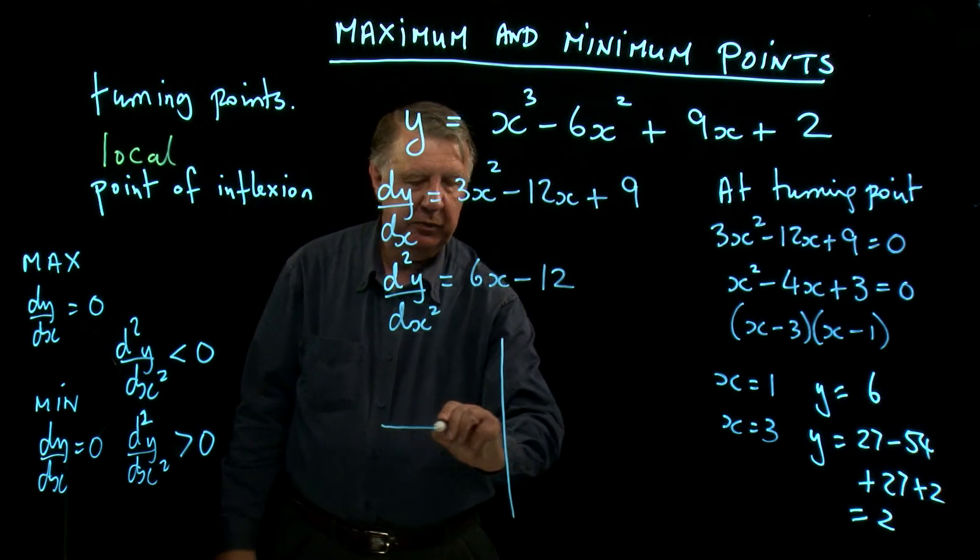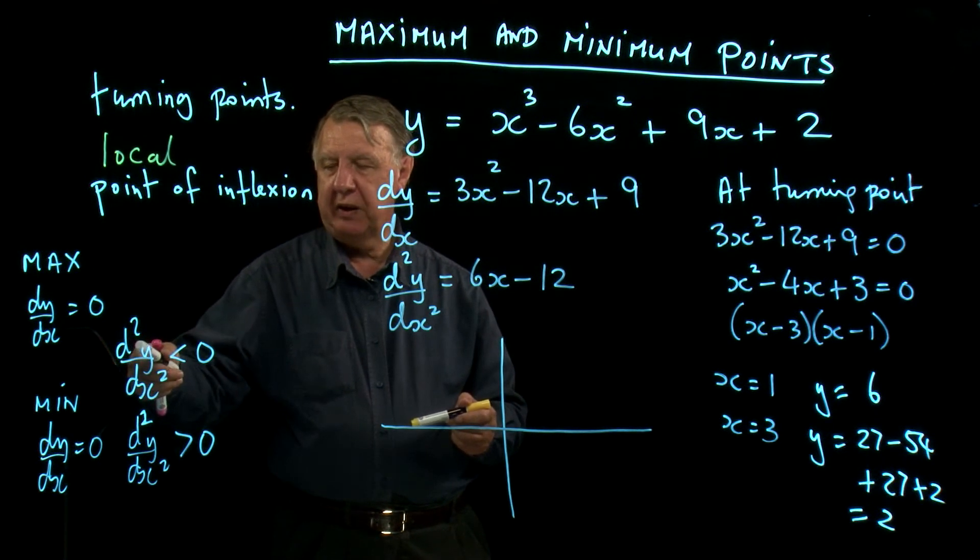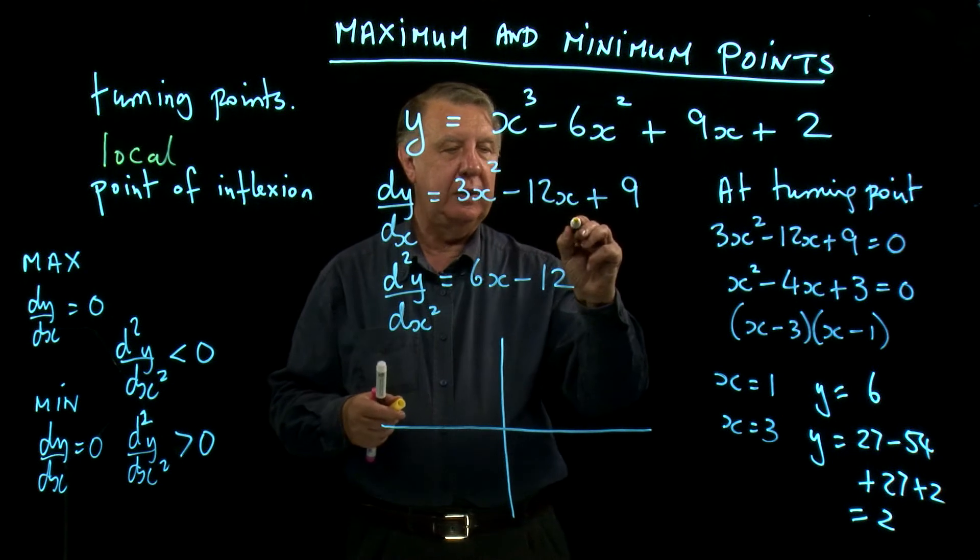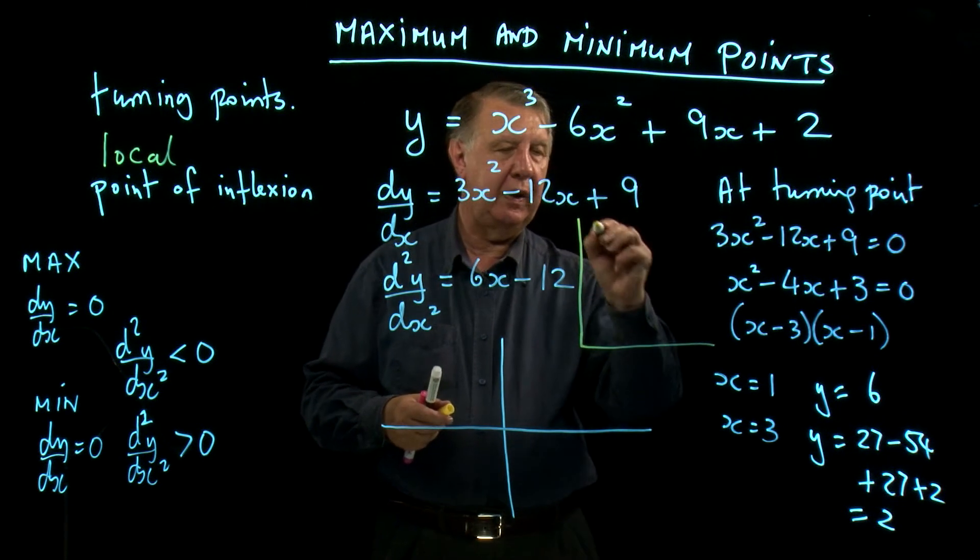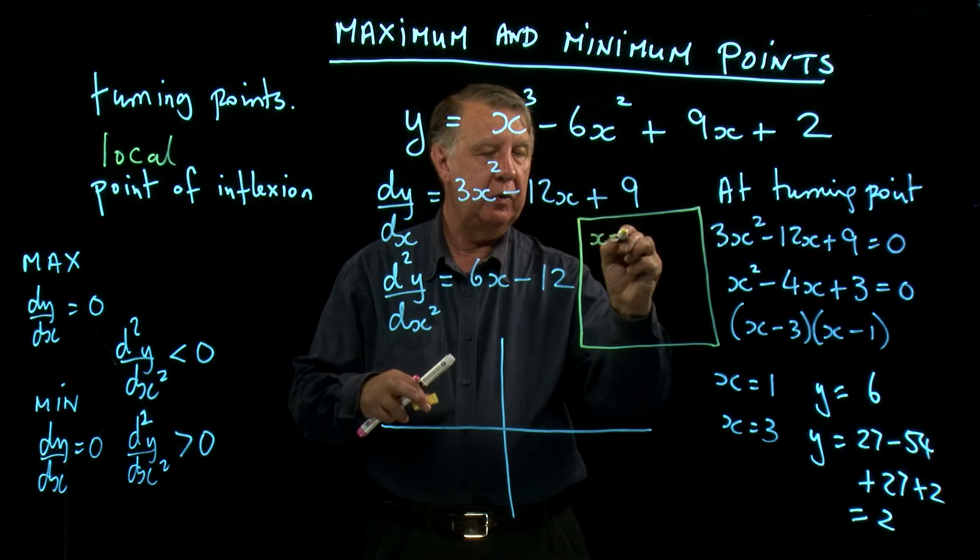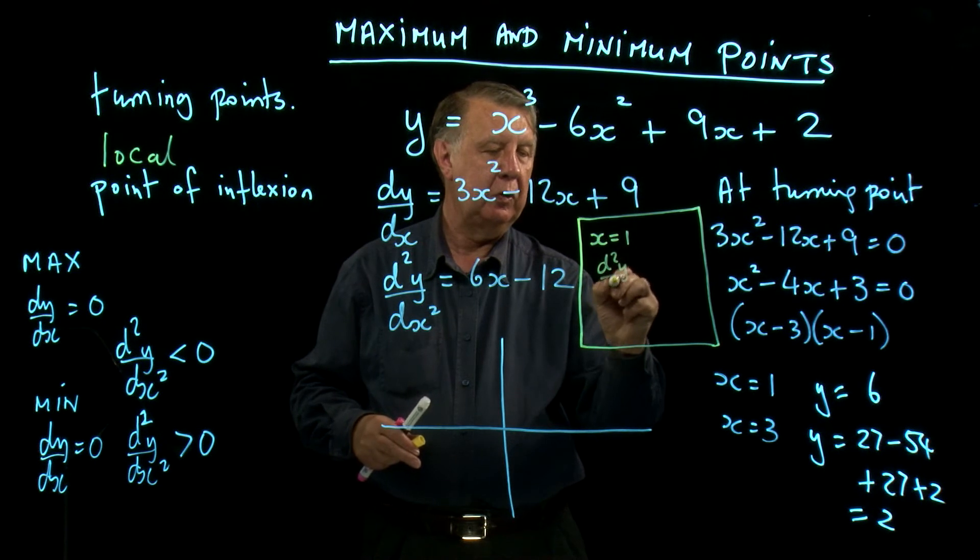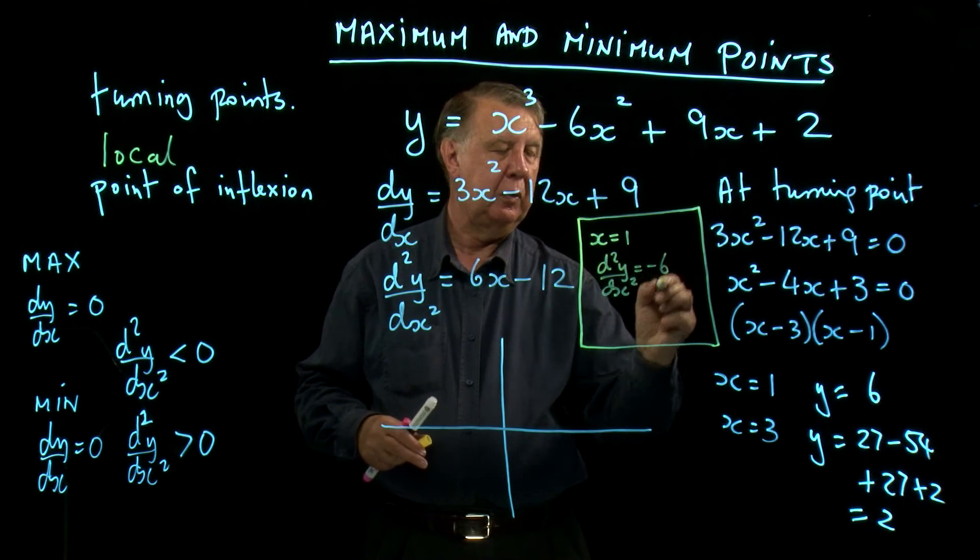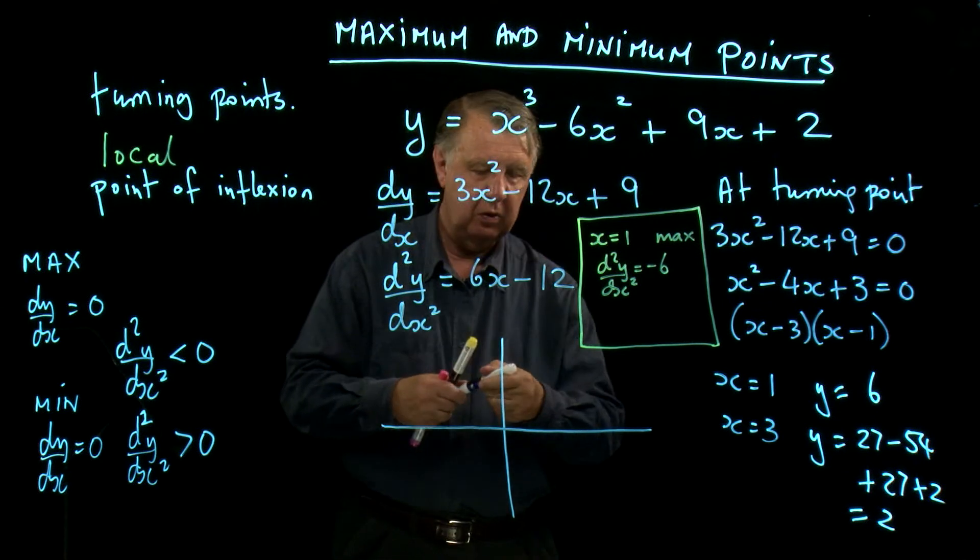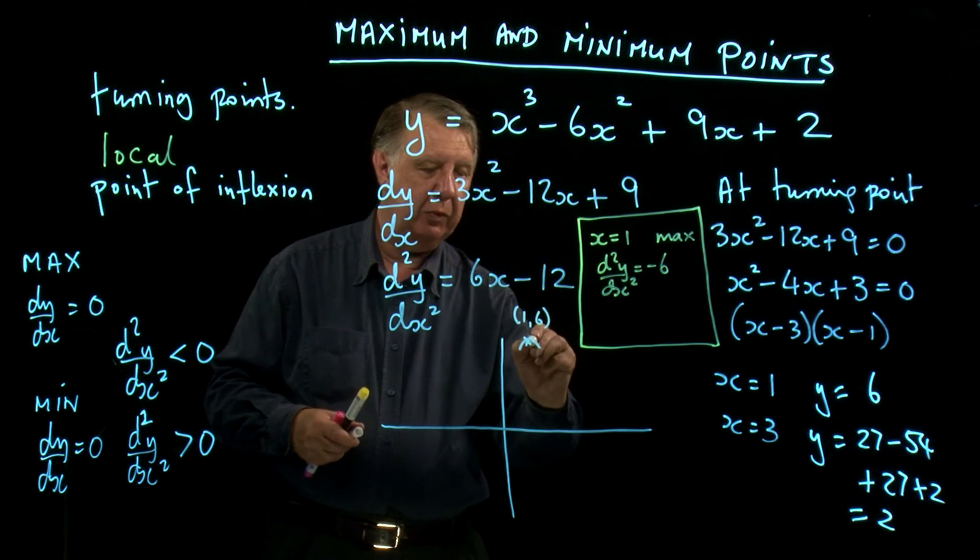Now let's start to think about what's happening. Now we look at these two tests. d²y/dx²—in both of them, we have to find out what d²y/dx² is. So let's focus on that here. So if x is 1, d²y/dx² will be -6. Negative, so this is a maximum point. So (1,6) is a maximum point.